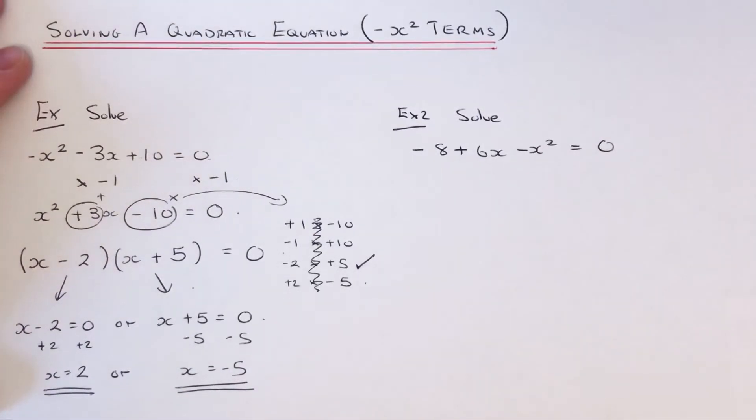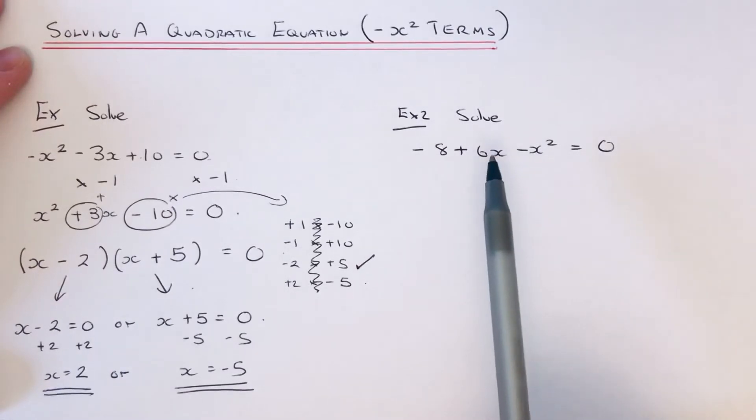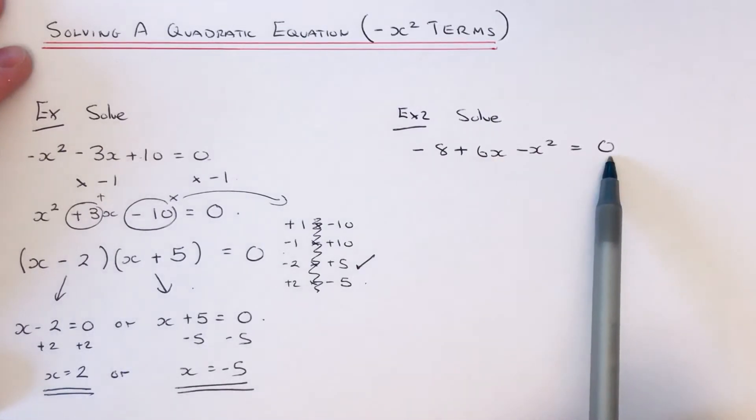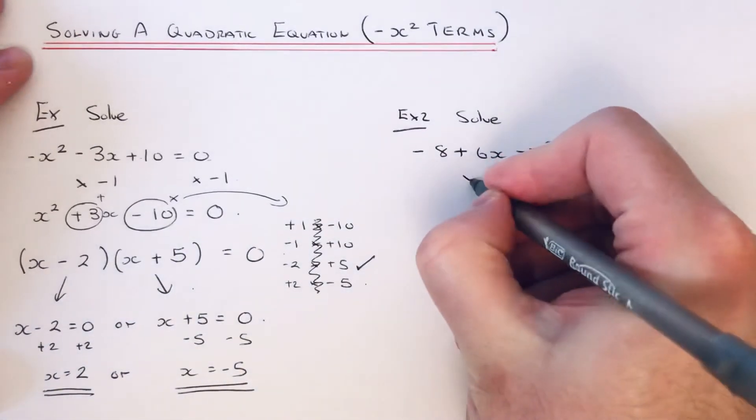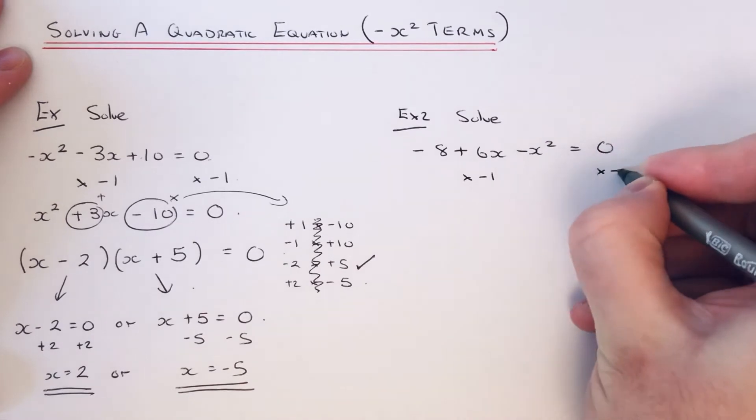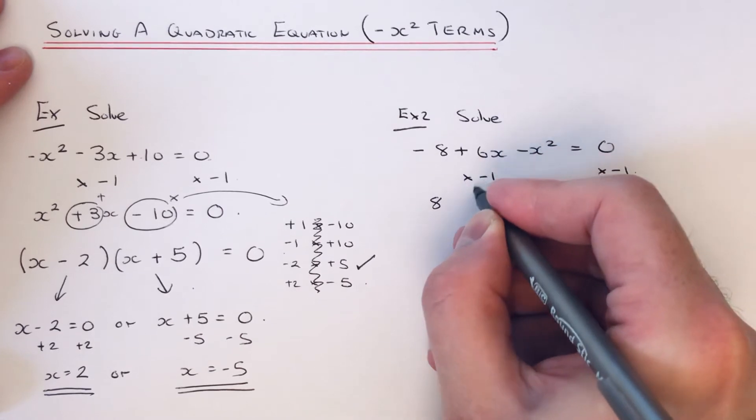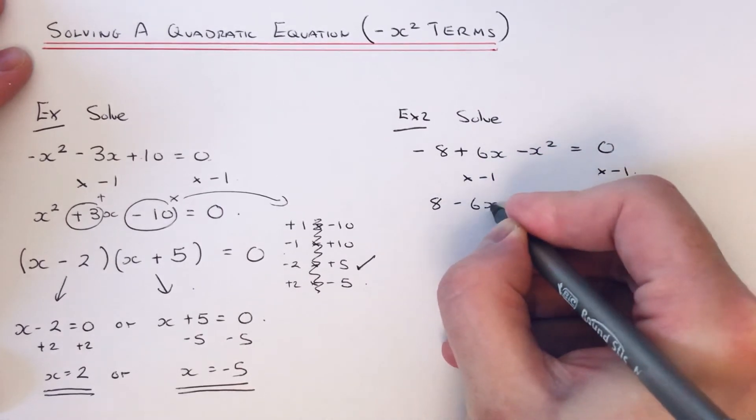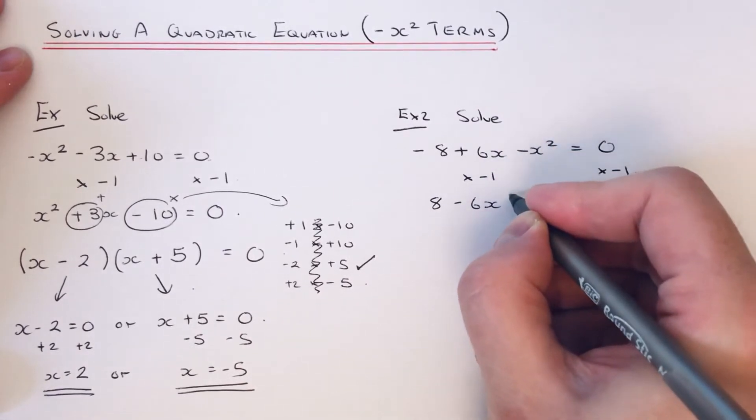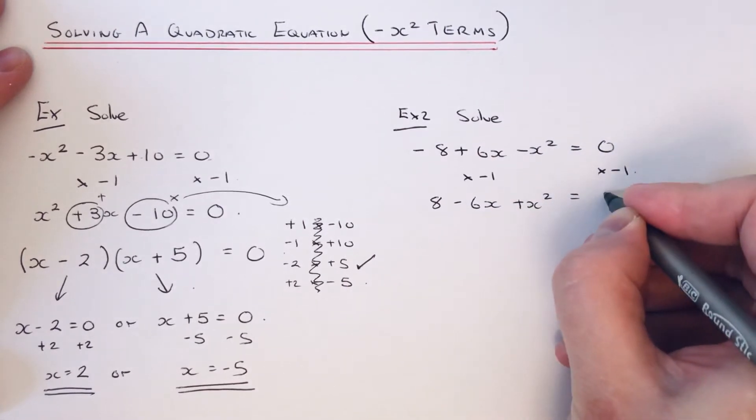So let's move on to the second example. A little bit harder this one because it's in a little bit of a different order to the first one. So we've got to solve minus 8 plus 6x minus x squared equals 0. So first of all, let's just multiply by minus 1 to make the minus x squared turn positive. So minus 8 times minus 1 is plus 8, 6x times minus 1 is minus 6x, minus x squared times minus 1 is plus x squared, and 0 times minus 1 is 0.